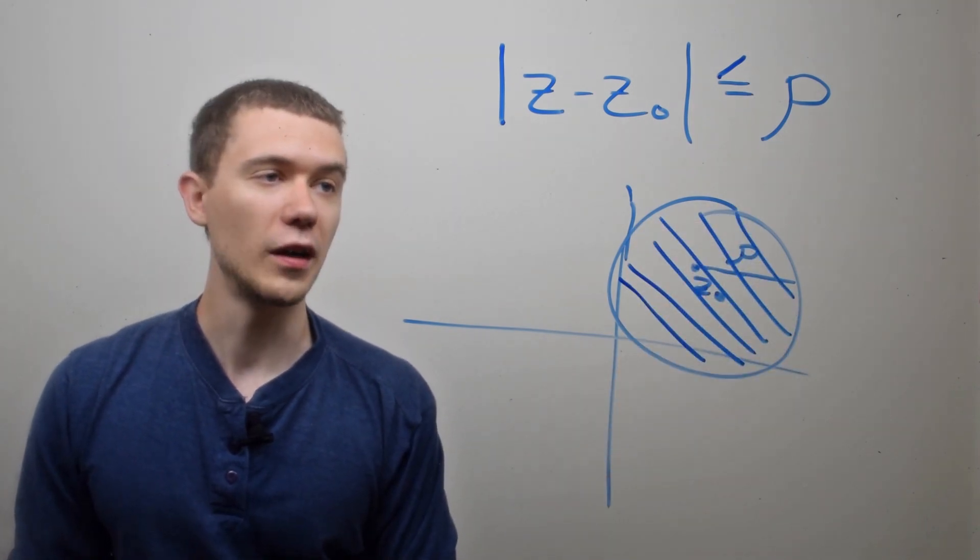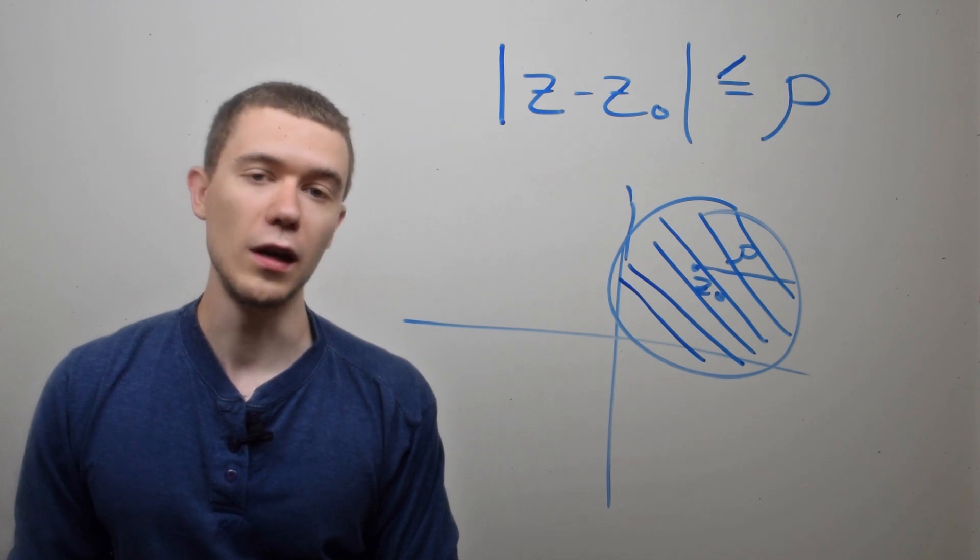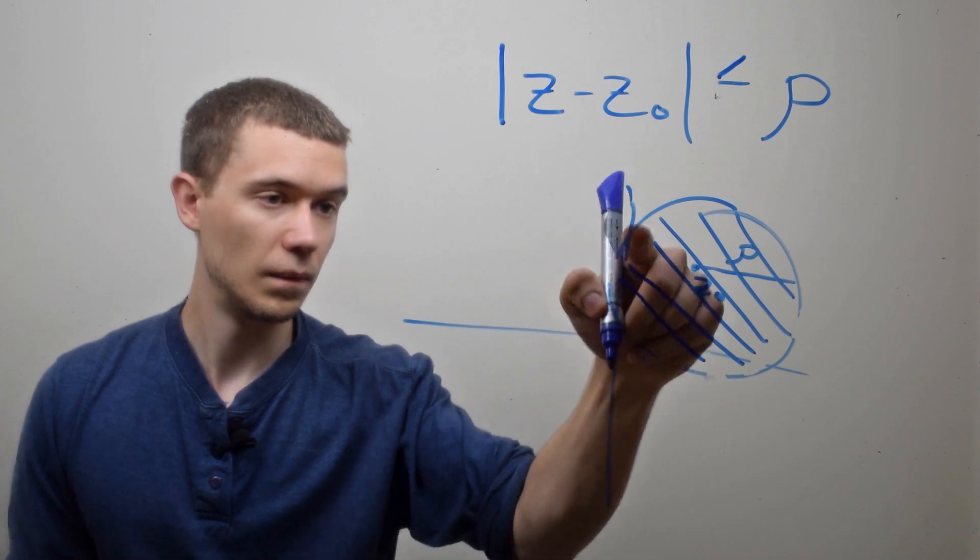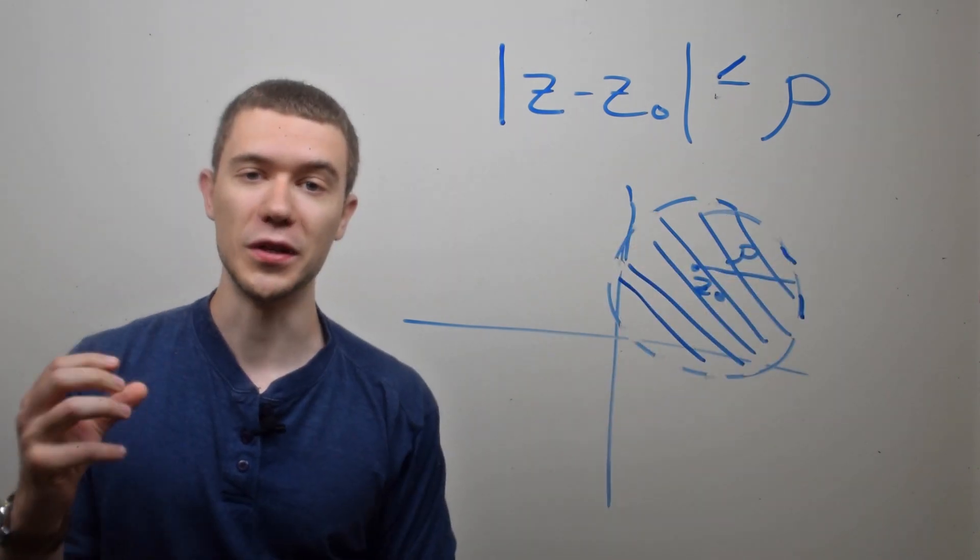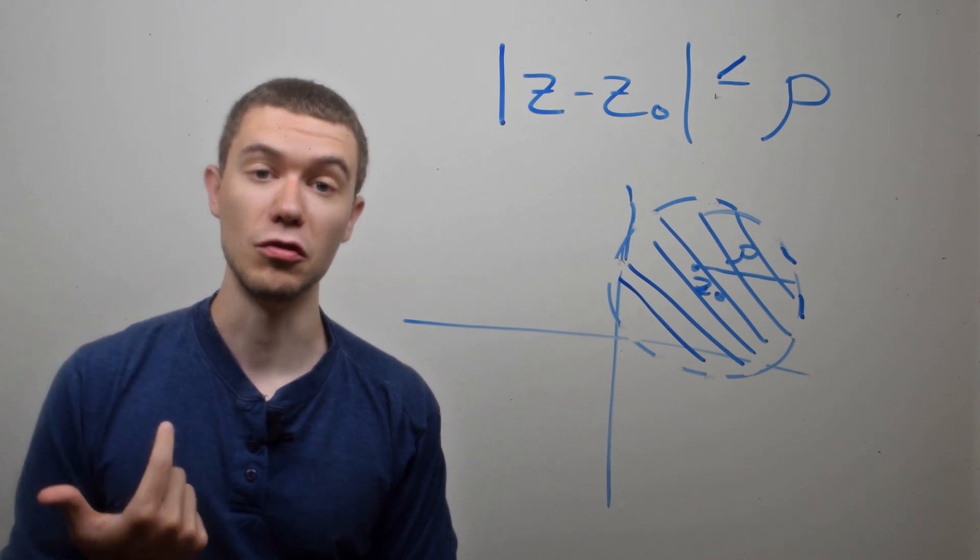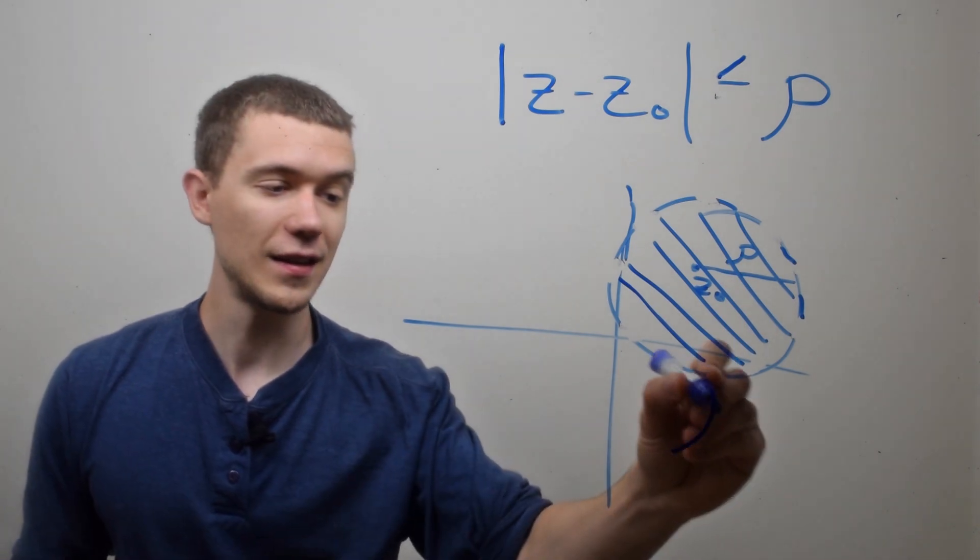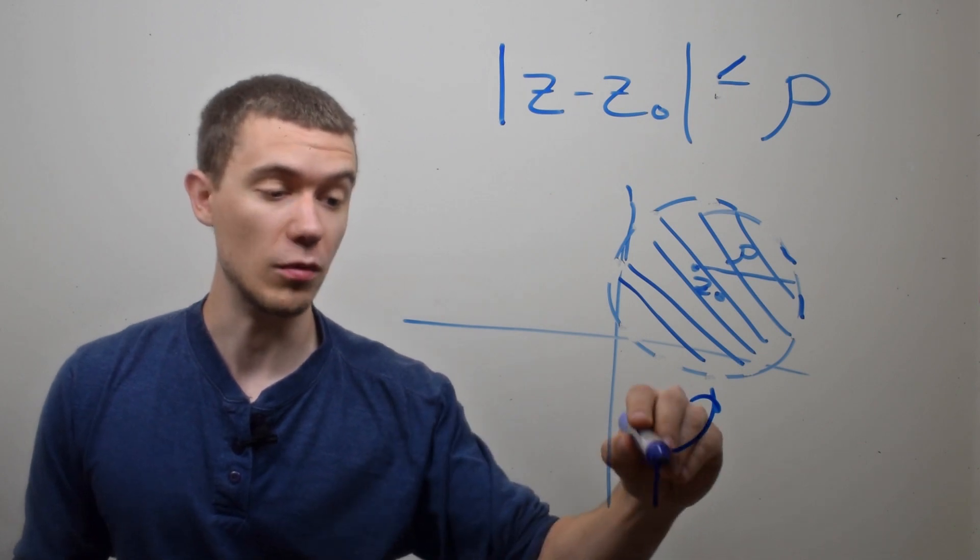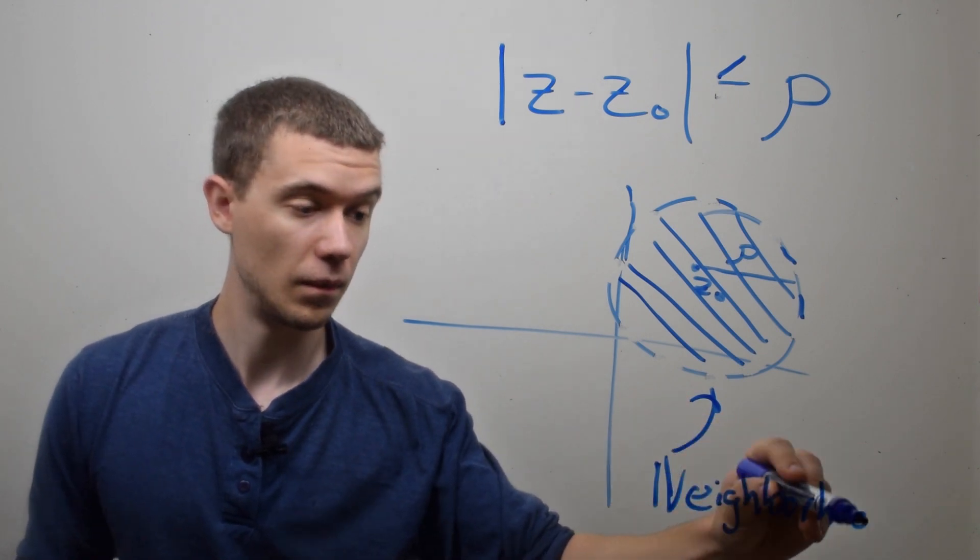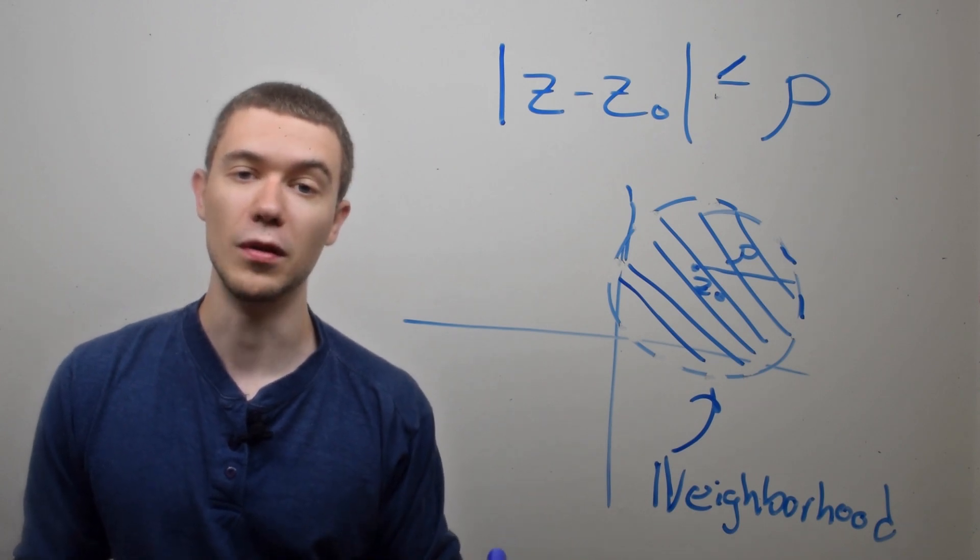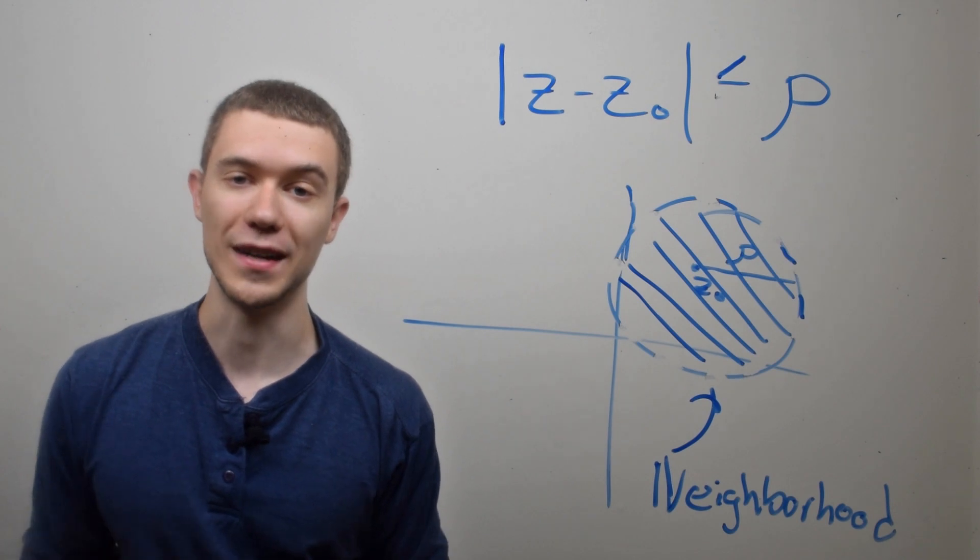If I start talking about not less than or equal to, but simply less than, this would describe just the inside of the circle, or the disk without its boundary. So this idea of just the interior of a circle is called a neighborhood. The picture that I've drawn here is a neighborhood of z-naught. And this idea of a neighborhood will let us classify other sets.